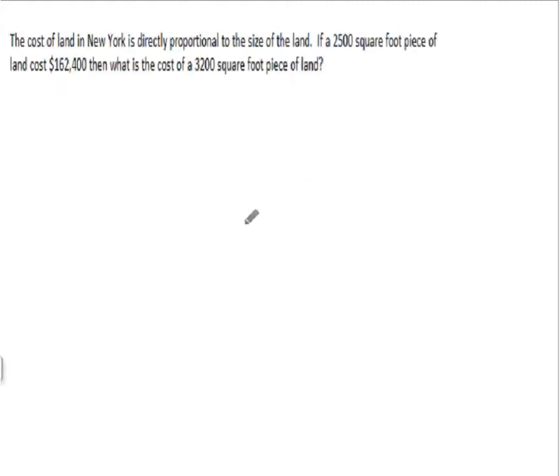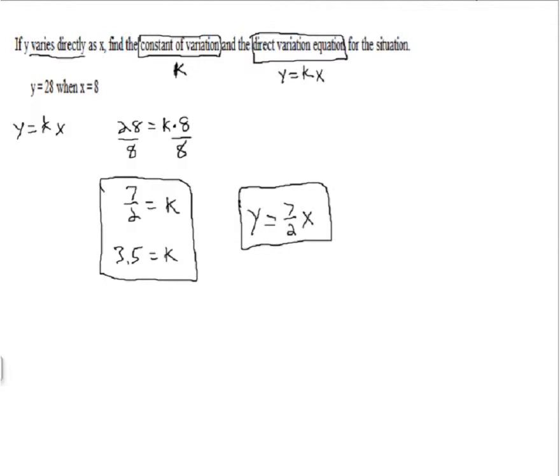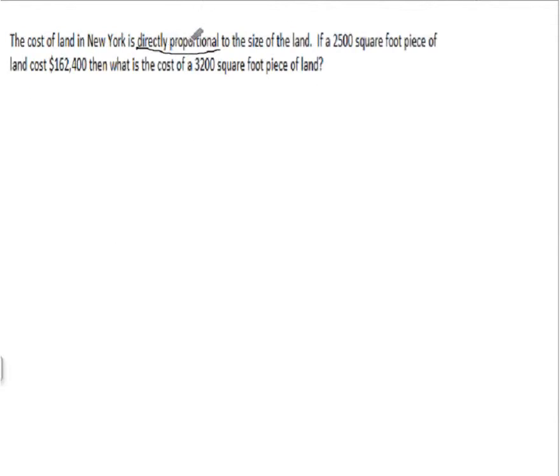Another example. We've got the cost of land in New York is directly proportional. There's your key words again. Directly proportional or directly related. This problem says varies directly. Just different ways of saying that same thing. So it's directly proportional to the size of the land. If a 2,500 square foot piece of land costs $162,400, then what is the cost of a 3,200 square foot piece of land? This problem, I'm going to show two different ways of doing it. First, let's use the equation y equals k times x.